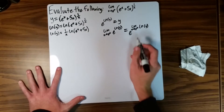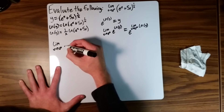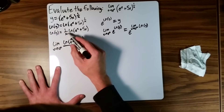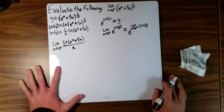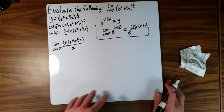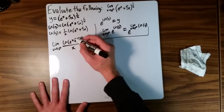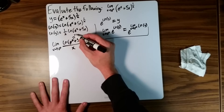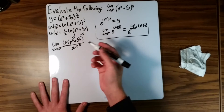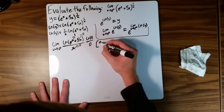Now we come back and re-evaluate this function. We have the limit as x approaches 0 from the right of the natural log of e to the x plus 5x, all over x, where the exponent has been pulled down into the denominator to make it a single fraction. To apply L'Hôpital's rule, we check the indeterminate form: e to the x approaches 1, 5x approaches 0, and x approaches 0, leaving natural log of 1 over 0, which is 0 over 0. So it is in the indeterminate form 0 over 0.